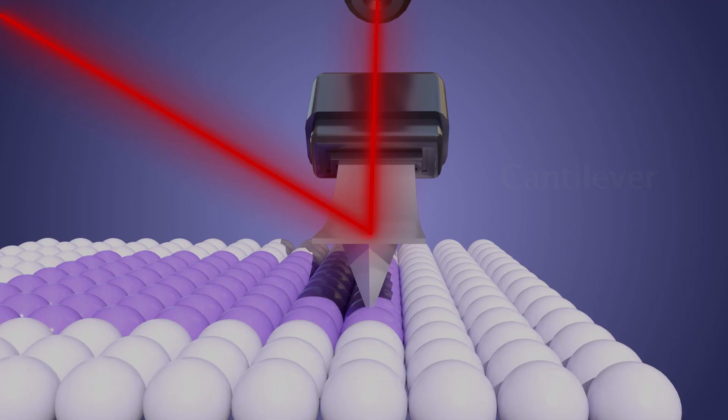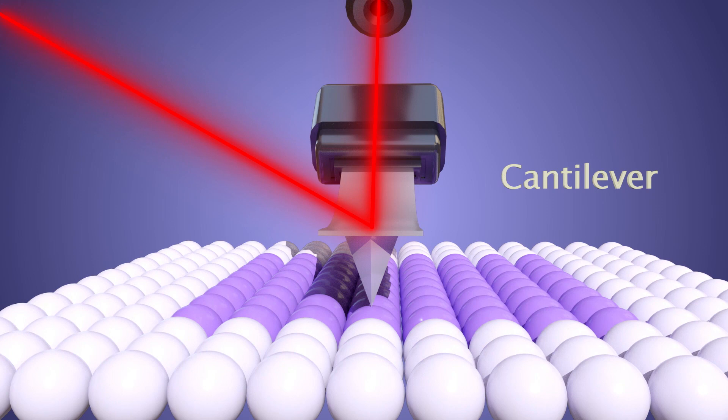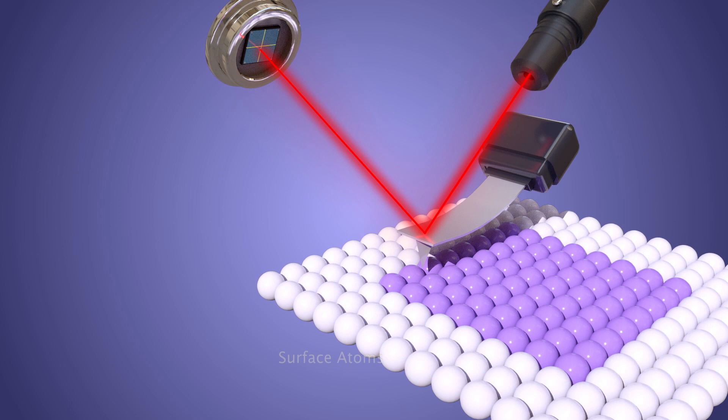As the tip scans, it moves up and down to follow the contours of the surface of nanostructures, and the cantilever is deflected accordingly. The magnitude of this very minute deflection is then recorded by the position of the reflected laser beam in the position detector.